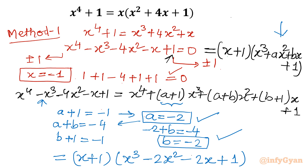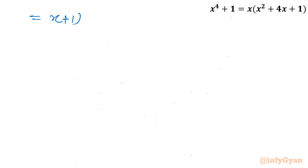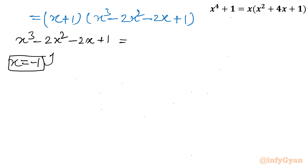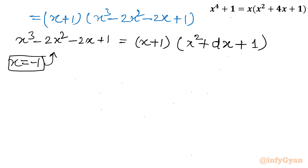Now I will apply the same process to the cubic polynomial x³ - 2x² - 2x + 1. Checking x = -1 again: it is once more a solution. So I can write the cubic as (x + 1)(x² + dx + 1), and I will expand to compare coefficients.